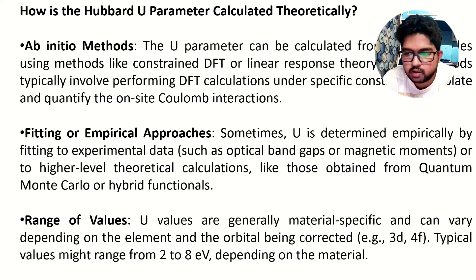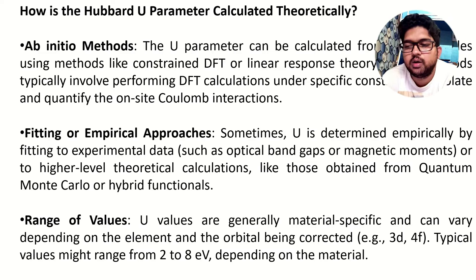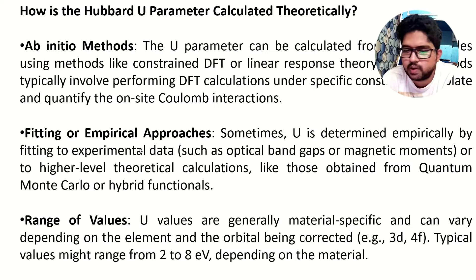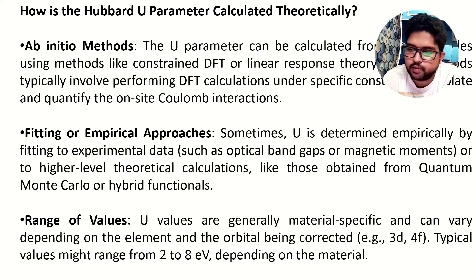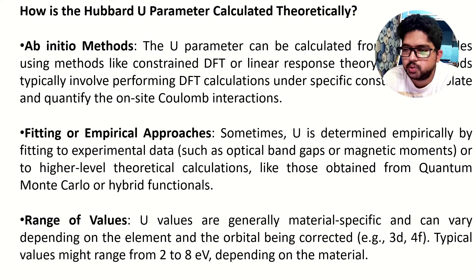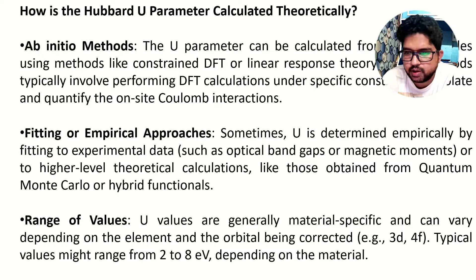In the empirical approach you will have experimental data for a material and then you tune the U-value to fit your energy value. Regarding the range of U-values: if you don't have experimental values, you can tune the U-value from one to nine, or typically the value for U will be in between two to eight. If you are optimizing the U-value you can start with one to nine. These are the ways to theoretically calculate the U-value.